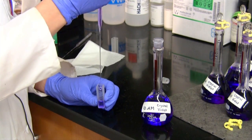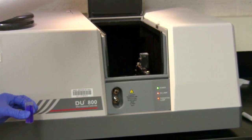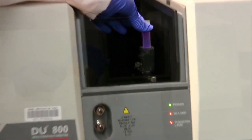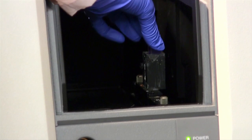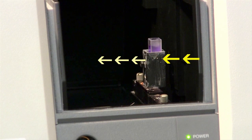First, we have to put some of our solution into a cuvette. We then place the cuvette into the holder inside the spectrophotometer. Now, when we take a measurement of our solution, the spectrophotometer will send a beam of light through our solution at whatever wavelength I set.